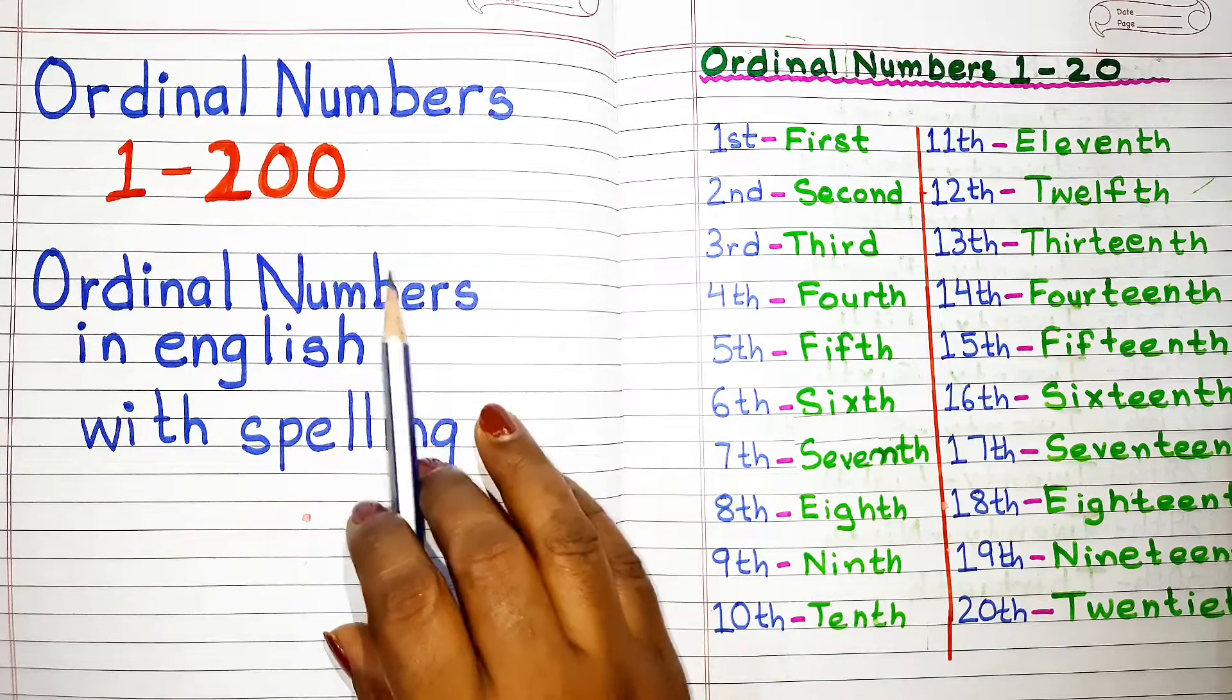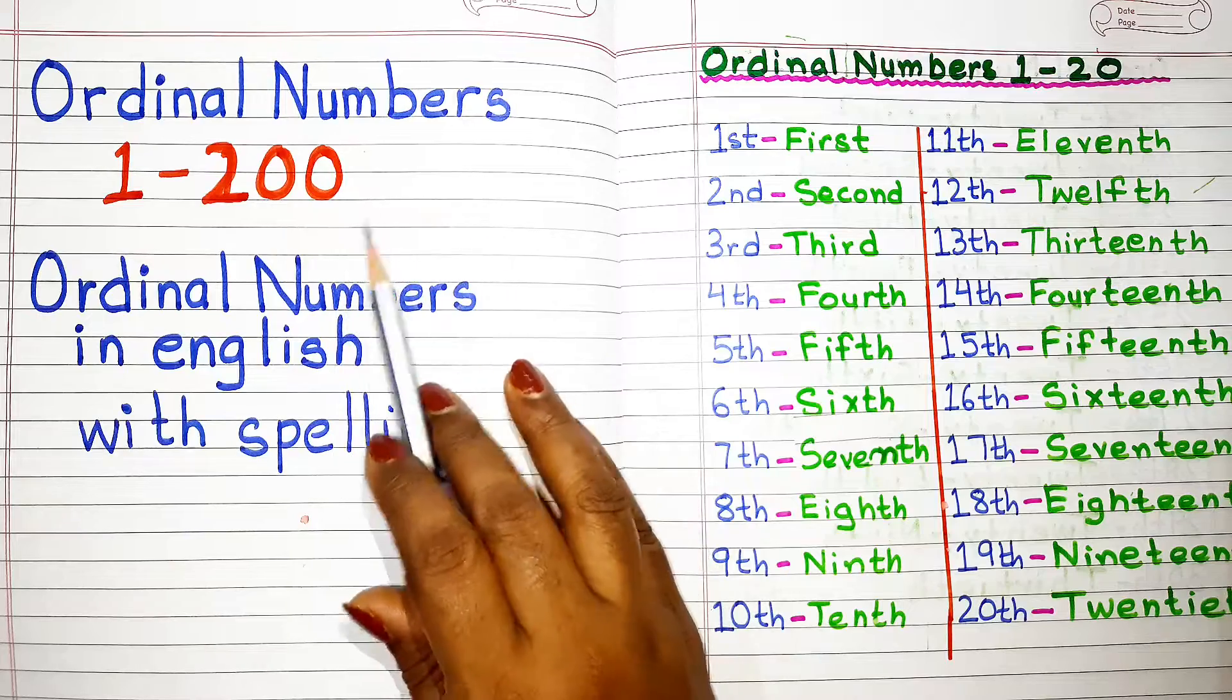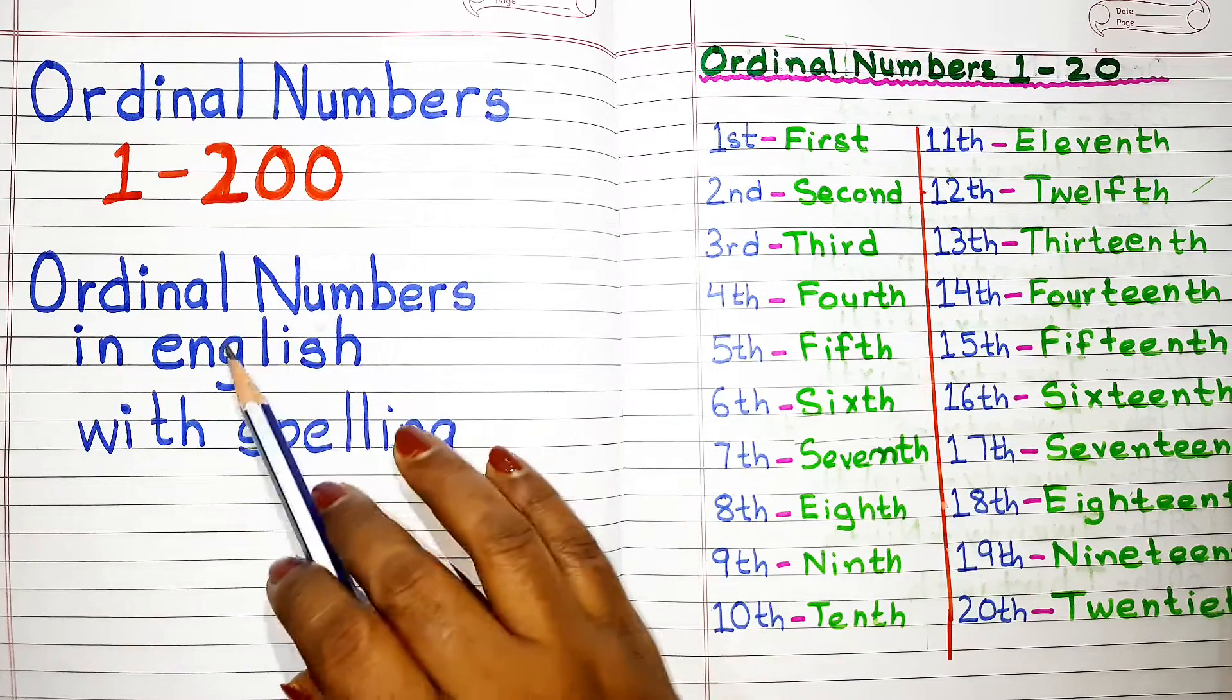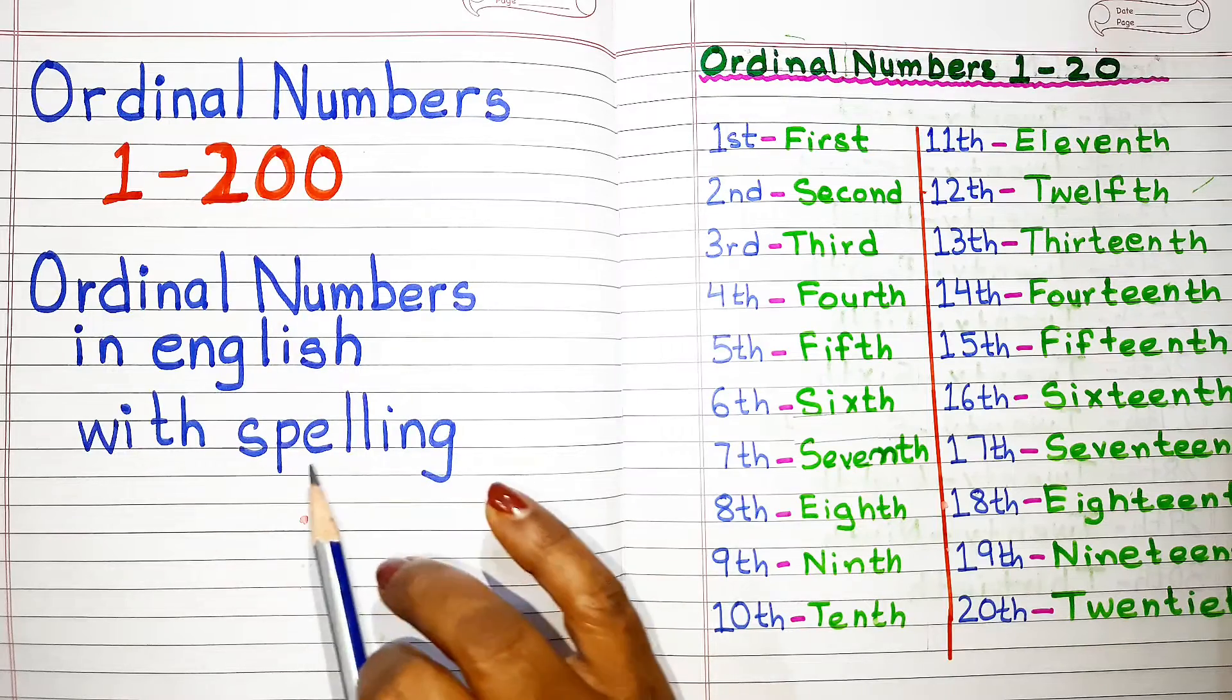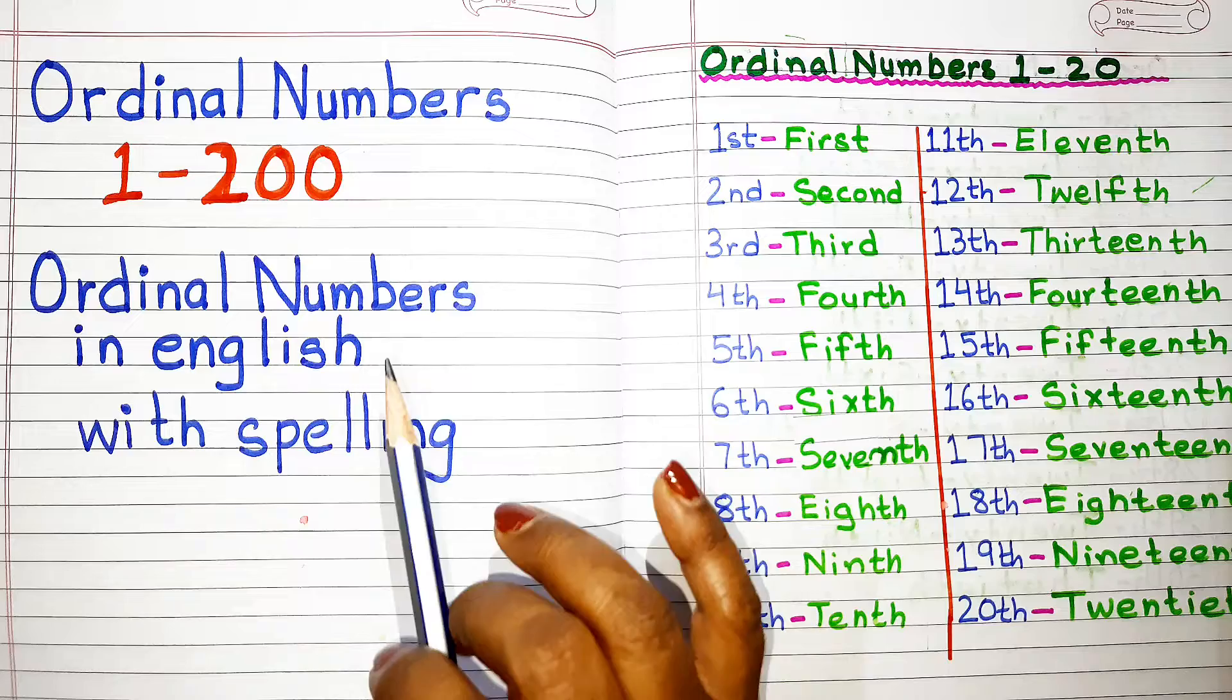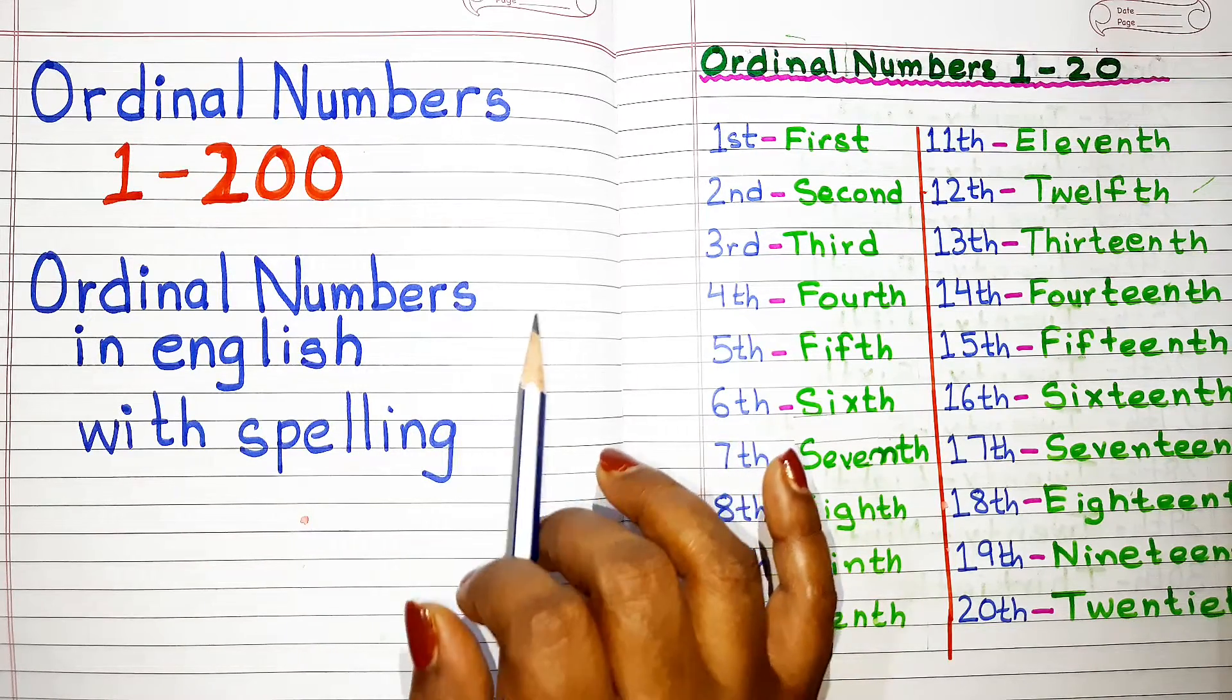Hello everyone, welcome to channel Simple Easy Learning. Today's video topic is ordinal numbers. In this video we will learn ordinal numbers from 1 to 200. We will also learn ordinal numbers in English with its spelling and pronunciation. For spelling you can pause the video and write the spelling. So let's begin the counting of ordinal numbers from 1 to 200.